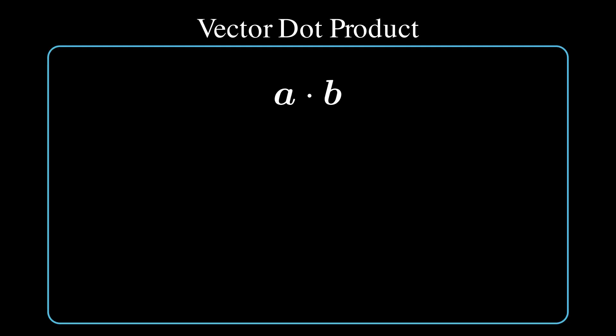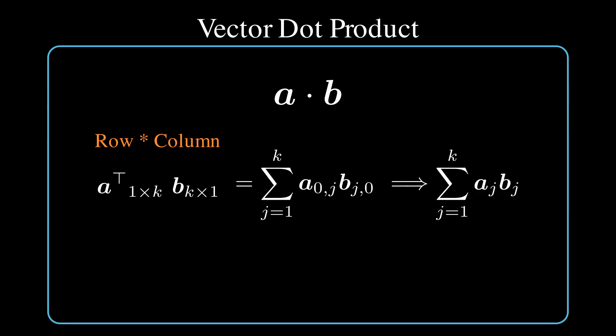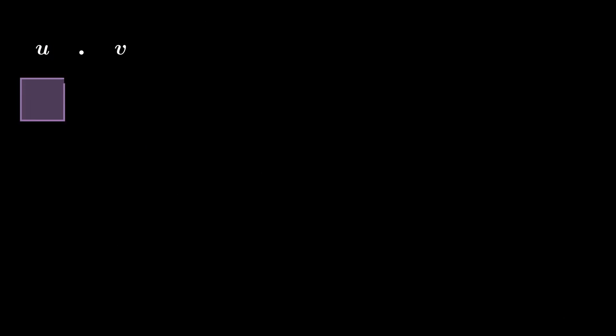The dot product is a fundamental building block of matrix multiplication. So before we go to matrix multiplication, we should first understand the concept of dot product. The dot product between two vectors is computed by multiplying each corresponding element and then summing up the products. Mathematically, we write it as: row vector A transpose with k elements and column vector B also with k elements, then sum the products of their corresponding elements. Note that we can only perform this operation if both vectors have k elements.